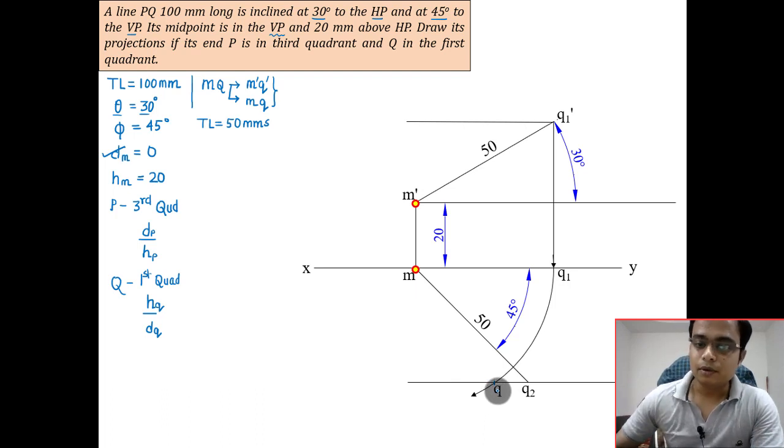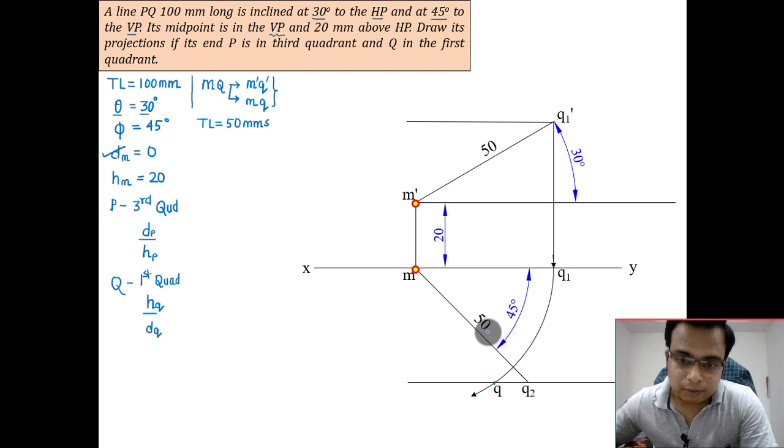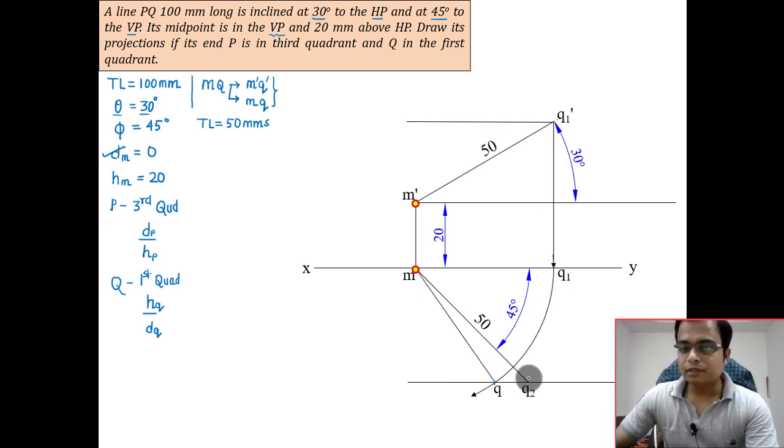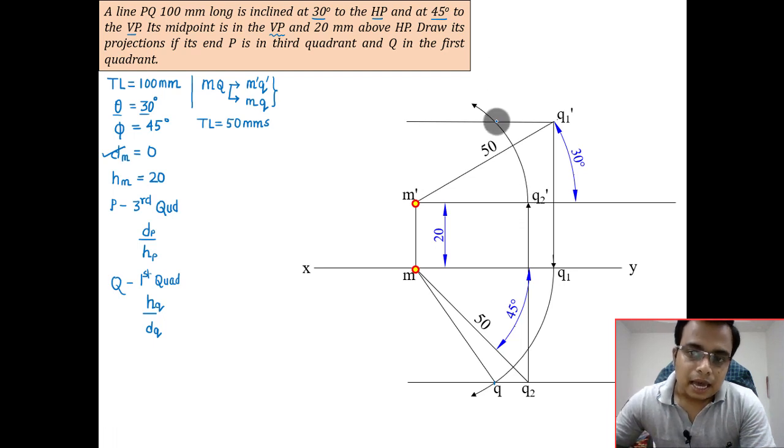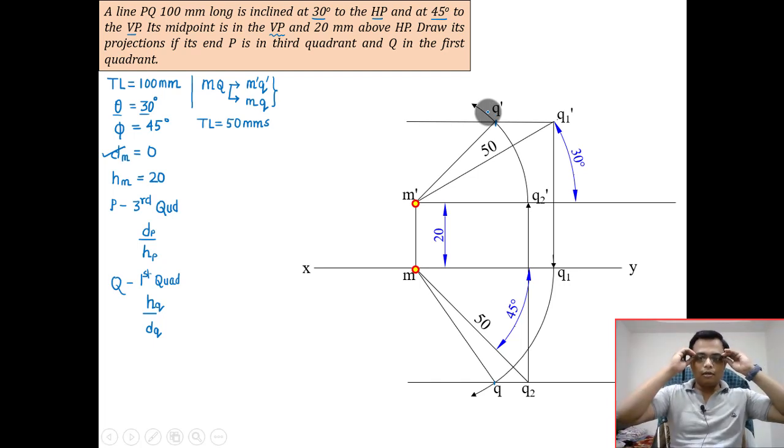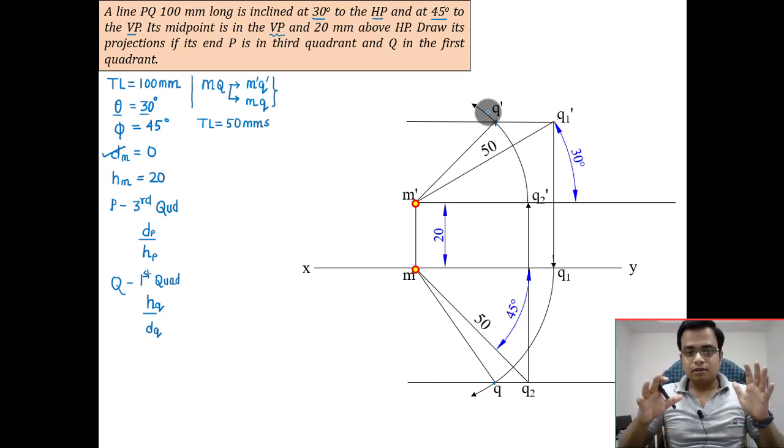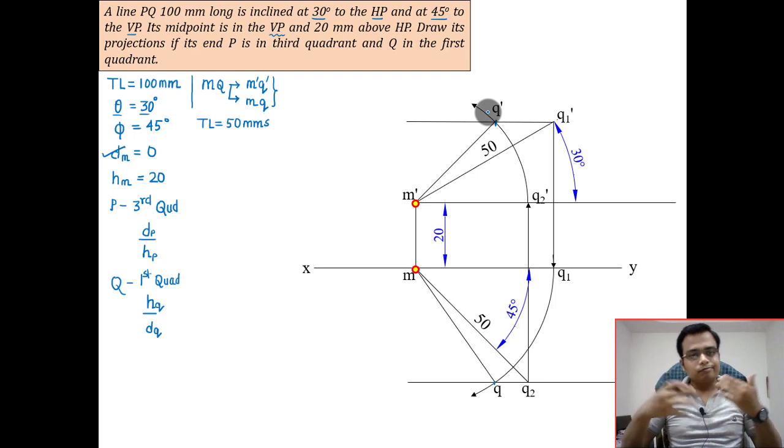Produce line from q dash in the downward direction, and from q2 in the upper direction. With m as center and mq1 as radius, rotate this in the clockwise direction. This will give you the top view of point Q, and you can go straight vertically upwards where it intersects - that's the front view. From q2, produce a line in the upper direction. This is the top view of the half true length, q2 dash. Then with m dash as center and m dash q2 dash as radius, rotate this in the anti-clockwise sense. This point is point q dash.